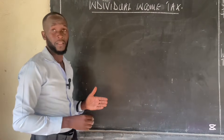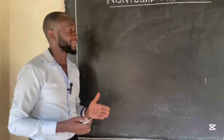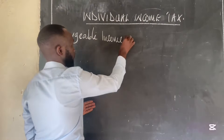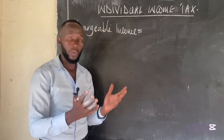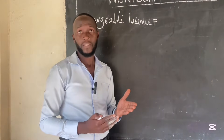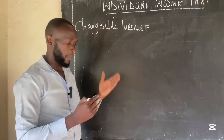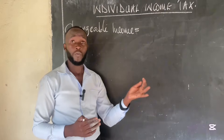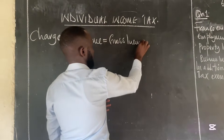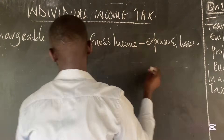In the definition of income tax, there is a statement that it is normally gotten from chargeable income. Now the question is: what is chargeable income? Chargeable income of a person is the total gross income of this individual in a given period of time. However, that income does not include expenses. The expenses incurred while earning this income are excluded. Chargeable income refers to gross income less expenses and losses.